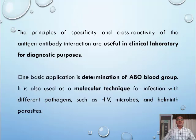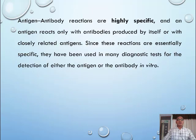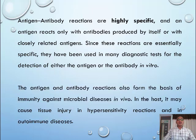One basic application is the determination of ABO blood group. It is also used as a molecular technique for detection of infection with different pathogens such as HIV, microbes, and helminth parasites. The antigen-antibody reactions are highly specific, and an antigen reacts only with antibodies produced by itself or with closely related antigens. Since these reactions are essentially specific, they have been used in many diagnostic tests for the detection of either antigen or antibodies in vitro.